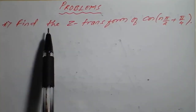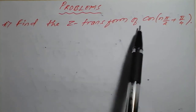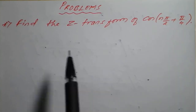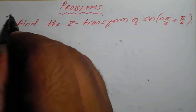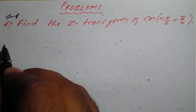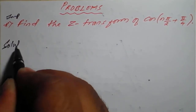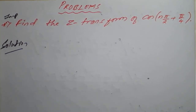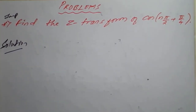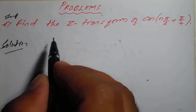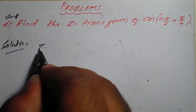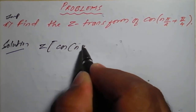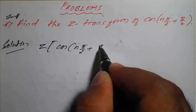Hello students, the problem is: find the Z transform of cos(nπ/2 + π/4). This is one of the important questions. The solution requires finding the Z transform of cos(nπ/2 + π/4).